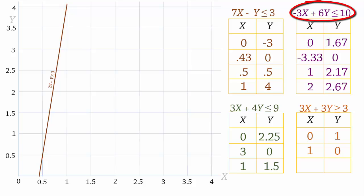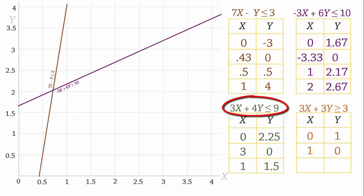For the second constraint, we can use the first point and the last two. And that's the line. For the third constraint, we can use 3, 0 and 1, 1.5. And that's the line. For the fourth constraint, we have 0, 1 and 1, 0. And that's the line.